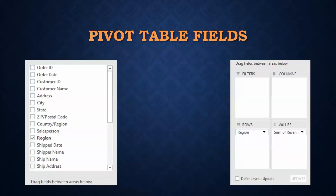Once we say OK, we get the pivot table fields panel. The left side shows every column header. The right side is where we configure our pivot table. For example, if I want to do sales by region — North, East, South, West — I drag that to the rows. Then I want to see the sum of revenue, which gets added to the values, and it's going to sum all of the revenues for my North, East, South, and West regions.